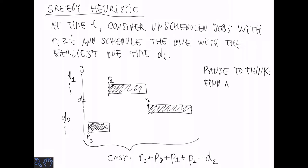Before moving on with the analysis I would like you to pause and think. Try to find an input with two jobs where greedy's schedule has cost at least 1.99 times the optimal.